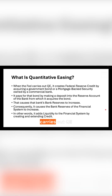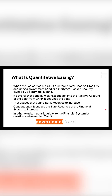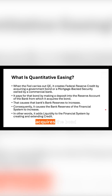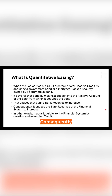When the Fed carries out QE, it creates Federal Reserve Credit by acquiring a government bond or a mortgage-backed security owned by a commercial bank. It pays for that bond by making a deposit into the reserve account of the bank from which it acquires the bond. That causes that bank's bank reserves to increase and, consequently, it causes the bank reserves of the financial system to increase.